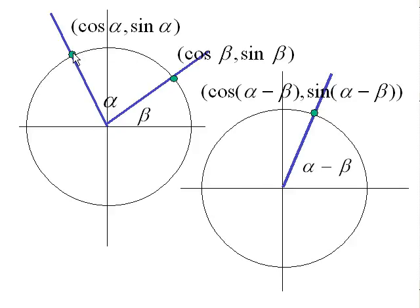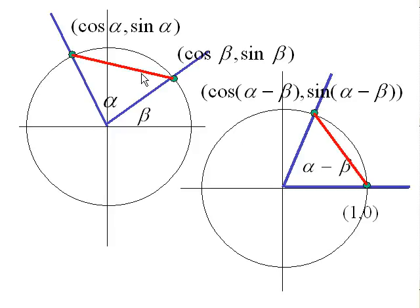These two angles subtend the same arc. The span around the circle is the same from here to here as it is from here to here. And so the chord drawn from (1, 0) to this point matches the chord drawn from the endpoints in terms of alpha and beta. This is the fundamental fact that lets you determine the relationship between the trig functions of the combination of angles and the trig functions of the individual angles.